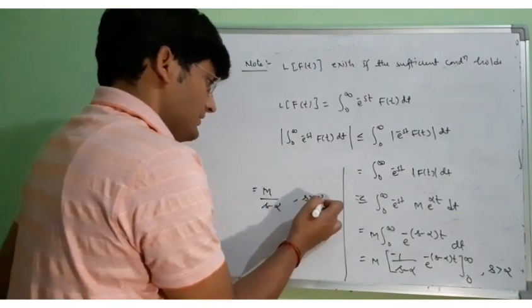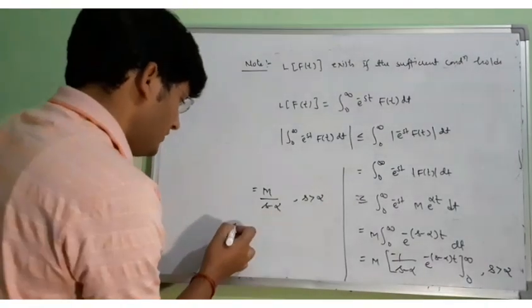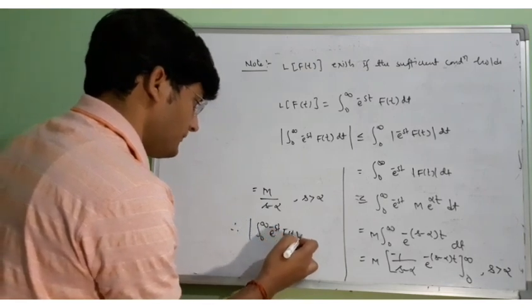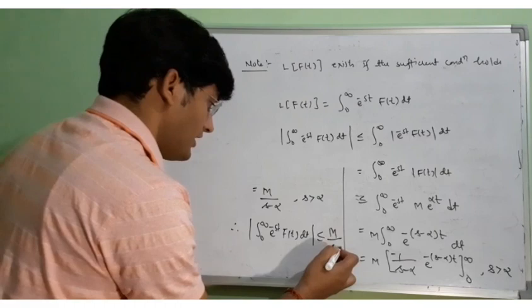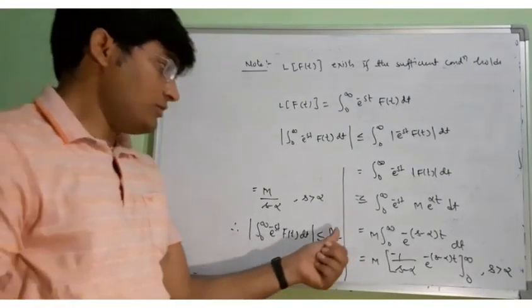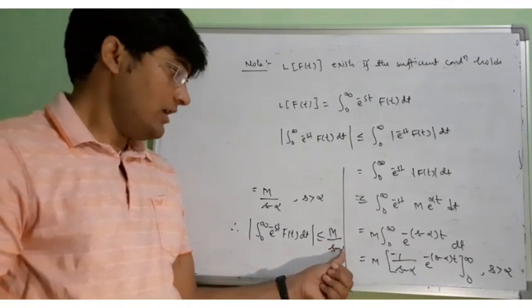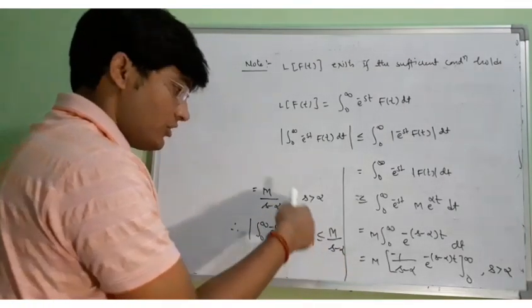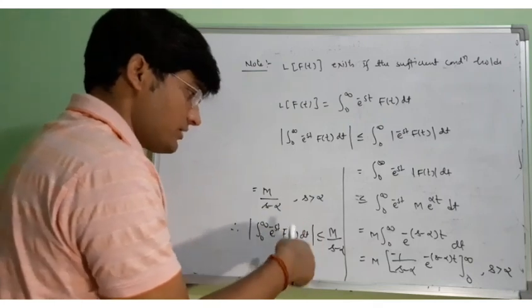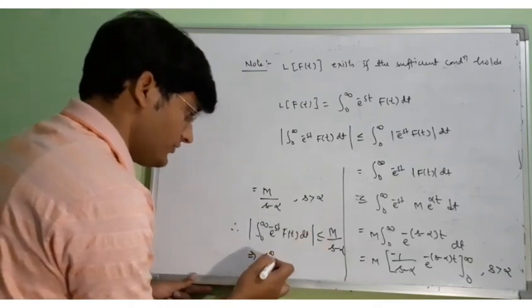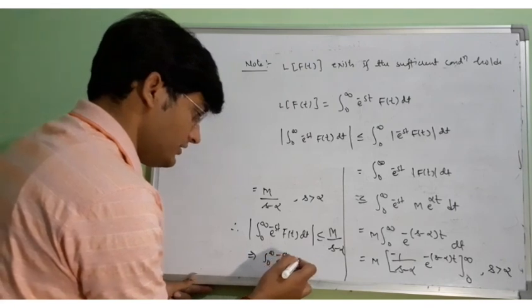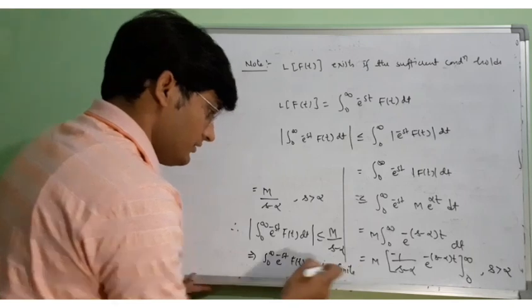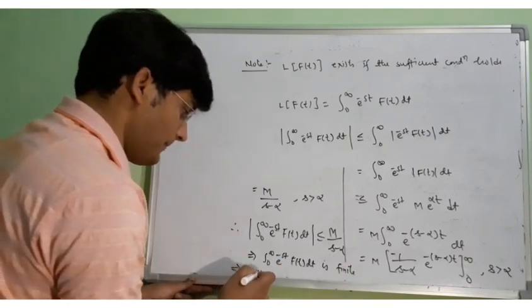Assuming s is greater than alpha, the upper limit gives 0 and the lower limit gives minus 1, so minus times minus is plus, giving m over (s minus alpha). Therefore, the modulus of the integral from 0 to infinity of e to the power minus st times F(t) dt is less than or equal to m over (s minus alpha). Since s and alpha are finite quantities, the value of this integral is finite, and hence the Laplace of F(t) exists.